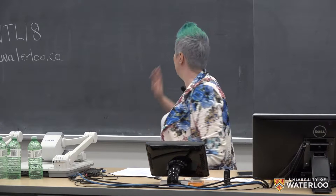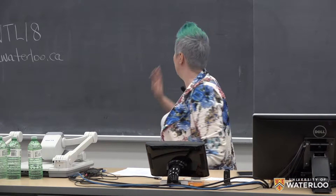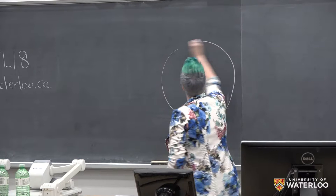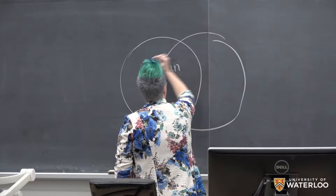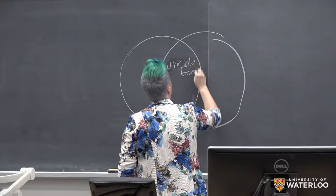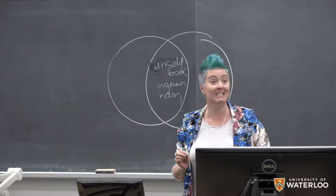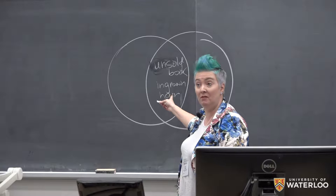We can explain this visually — we have a board, so let's do that. A simile is like a Venn diagram. Here's our Venn diagram. In the overlapping section we have 'unsold book' and 'ingrown hair.' What does that imply about them? That they have properties in common — they share aspects in common. They're itchy, they piss you off, they are in the wrong place, they have not yet broken out, et cetera.